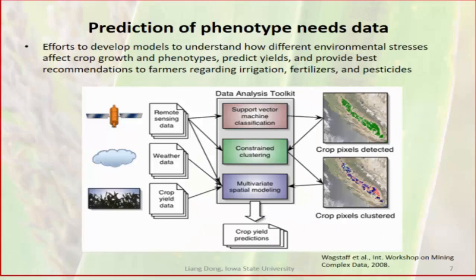There are lots of ongoing efforts to develop models to understand how environmental stresses—abiotic and biotic—affect crop growth and phenotype, and to predict yield and provide best recommendations to farmers regarding irrigation, fertilizers, and pesticides.